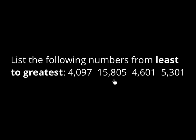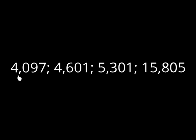So be careful. If you can look and see which one's going to be the greatest — not to give you too many answers — what's going to be the next greatest by looking at the thousands? Pause if you need to and write down your answer. From least to greatest, the answer is: 4,097; 4,601; 5,301; 15,805. 4,097 was the least because even though the thousands were the same as 4,601, the zero is less than the six in the hundreds column. Then we know that 5,000 is bigger than 4,000, and certainly 15,000 is bigger than the rest of them.